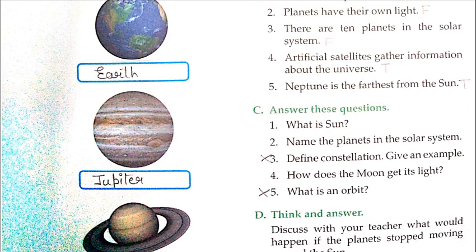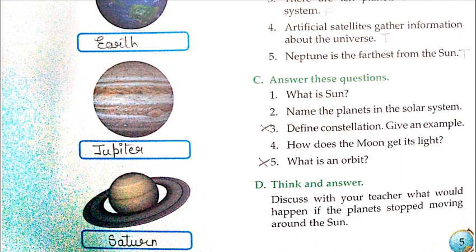Answer these questions as homework. What is the sun? Sun is a star with its own heat and light — it is a part of the solar system. Name the planets: Mercury, Venus, Earth, Mars, Jupiter, Saturn, Uranus, and Neptune. Write them in order from closest to farthest from the sun.